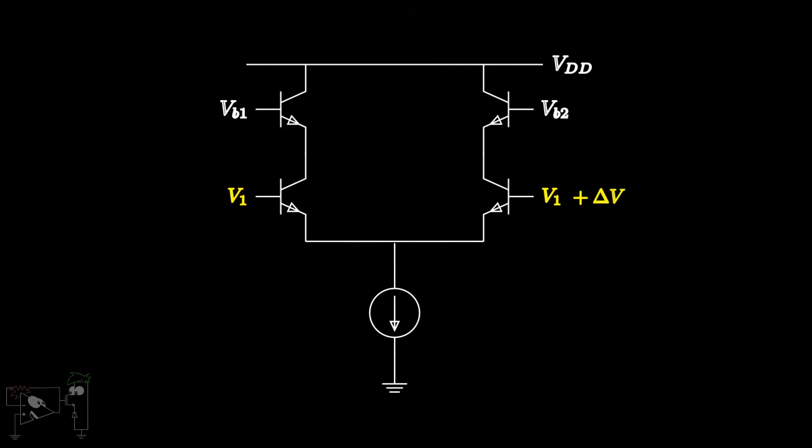We can cancel the effect of the input-offset voltage by applying a differential input of the same value in the opposite polarity.